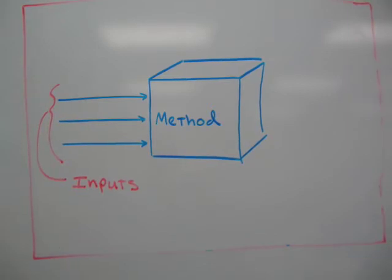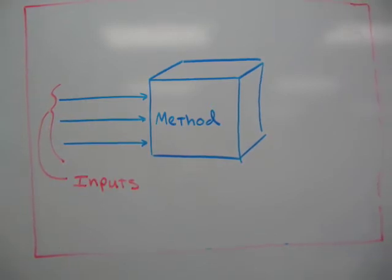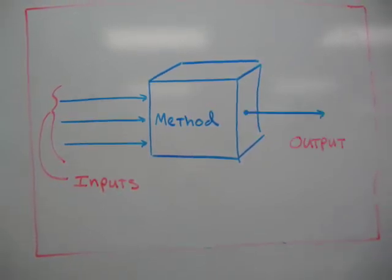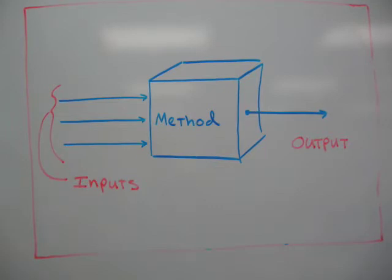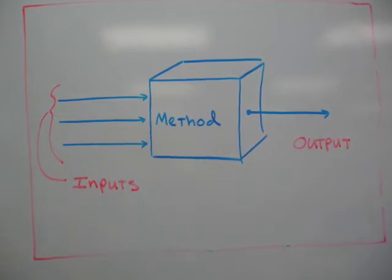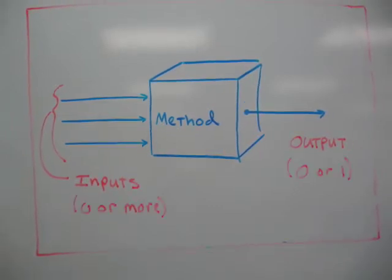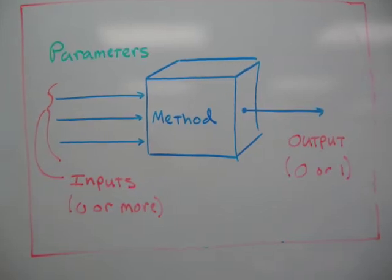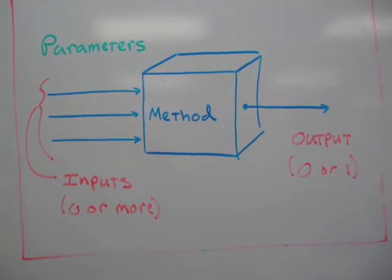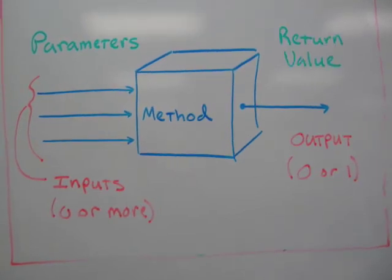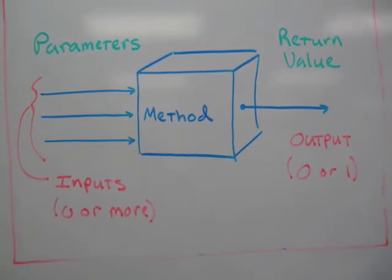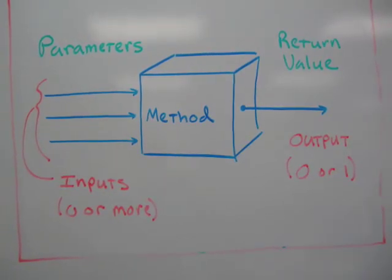Methods take inputs, which determine exactly what the method does. Methods produce an output, which is the final product of the method. A method may have zero or more inputs and zero or one output. The inputs to a method are called parameters. The output from a method is called the return value.